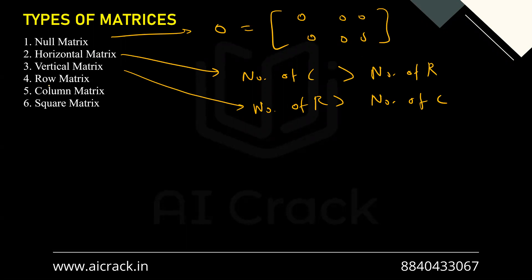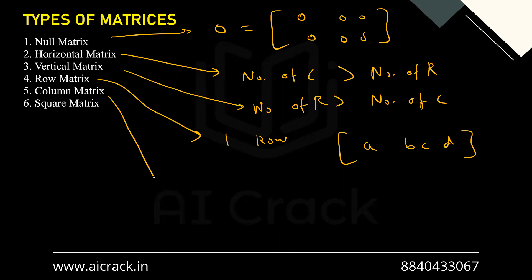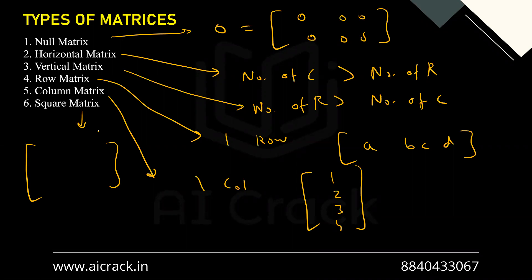A row matrix is a special case of a horizontal matrix — it has just one single row and multiple columns, so it looks like [a, b, c, d]. A column matrix has just one single column, like [1, 2, 3, 4]. A square matrix, as the name suggests, has equal numbers of rows and columns, for example a 3×3 matrix like [a,b,c / d,e,f / g,h,i].